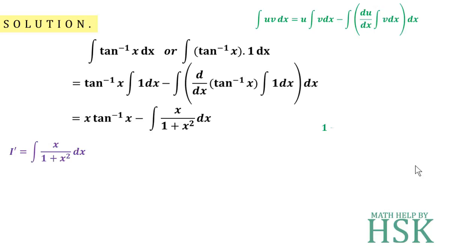To integrate this, I'm going to substitute 1 plus x square equals t. On differentiating both sides with respect to x, I get the differentiation of 1 plus x square is 2x, so 2x dx equals dt. Therefore, x dx equals dt over 2.